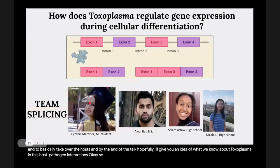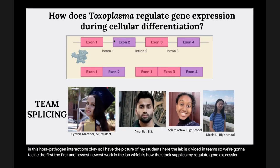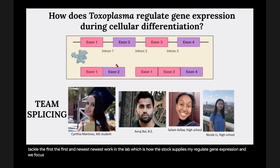My lab is divided into teams. We're going to tackle the first and newest work, which is how does Toxoplasma regulate gene expression. We focus specifically on alternative splicing. This is team splicing — Cynthia is a master's student driving the project, along with two high school students who just keep splicing genes all around.